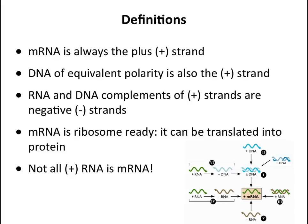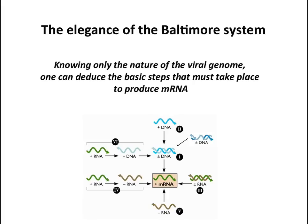When we look at the Baltimore scheme, these pluses and minuses refer to the polarity of the nucleic acid with respect to mRNA. For example, the single-stranded plus-strand DNA viruses have a single strand of DNA of plus polarity — the same polarity as mRNA — but of course DNA cannot be translated. By looking at the kind of nucleic acid present, you can already deduce what viruses have to do to get to mRNA. This is an elegant system: if you know what kind of genome is in the virus, you can tell all the steps that have to be taken to get mRNA.